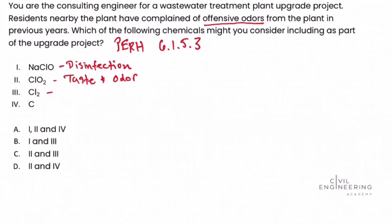Next is Cl₂, chlorine. Looking it up in the table, chlorine is used in disinfection as well. And finally, activated carbon — looking it up in the table in section 6.1.5.3 — we see that it is used to control taste and odor.